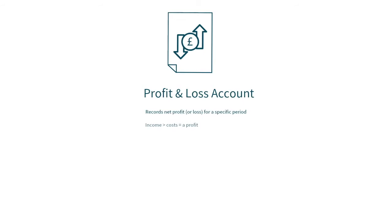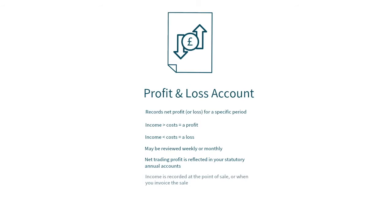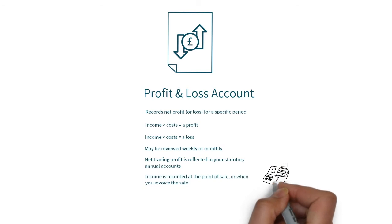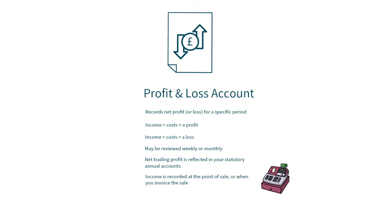Whether you made a profit or loss is simply down to whether your income from sales activity was higher than your costs incurred — therefore a profit — or lower than your costs incurred — therefore a loss. The profit and loss account will often be considered when you review trading performance on either a weekly or monthly basis, and your statutory accounts will show the net trading profit or loss for your statutory annual reporting period. Income is recorded at the point of sale or when you've invoiced the sale, and will only be included in a particular reporting period if the sales invoice is dated within that period. This is irrespective of whether your customer has paid you or not.